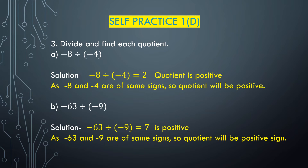Now we solve question number 3: divide and find each quotient. Part A: minus 8 divided by minus 4. Both minus 8 and minus 4 are negative integers — equal sign — so the quotient will be positive. We know 4 multiplied with 2 is 8, so minus 8 divided by minus 4 equals 2, which is a positive integer.